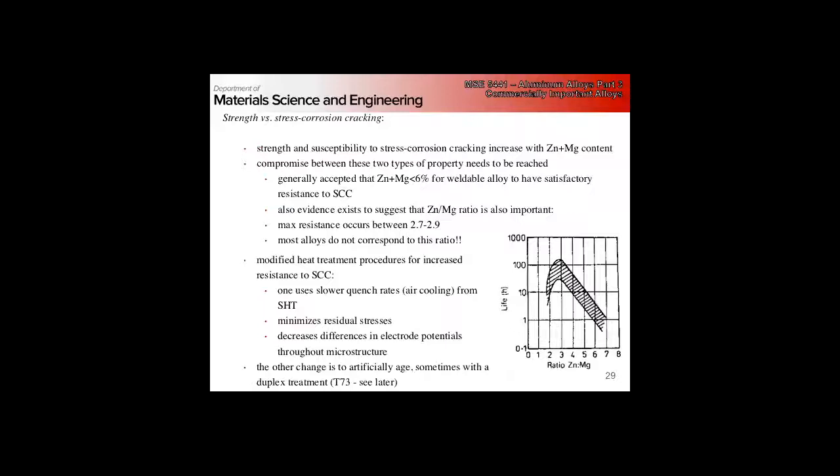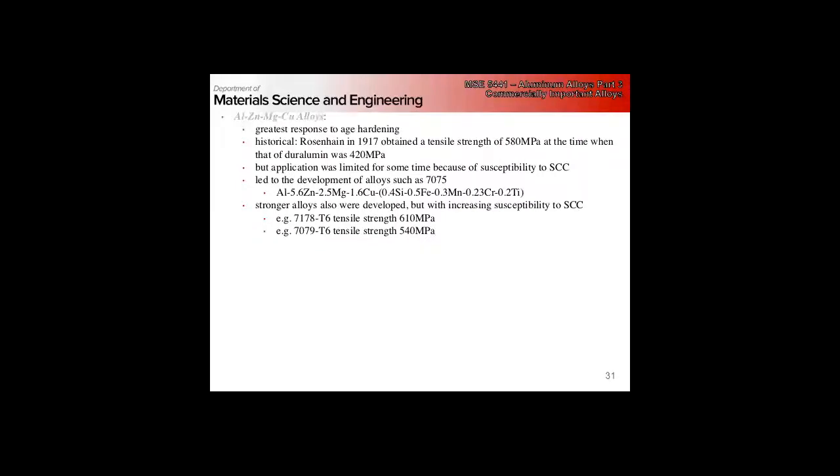Then we talked about this duplex heat treatment T73. Remember back in the first lecture of aluminum, we talked a lot about why we sometimes need these duplex heat treatments, about getting a homogeneous nucleation of GP zones followed by nucleation of the reinforcing phase that we want. This is just an example of one that is commercially important.